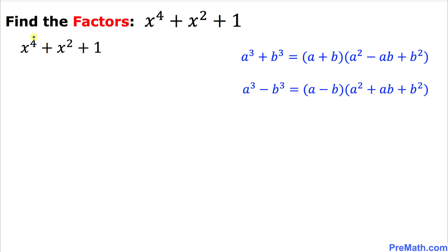If we focus on x to the power 4, we can write it as x to the power 3 times x to the power 1. Now let's manipulate this problem a little bit.